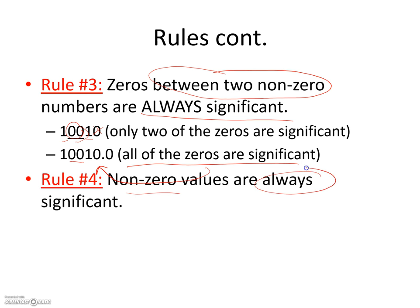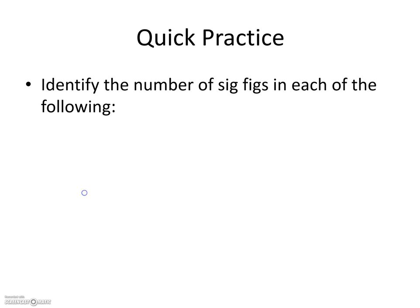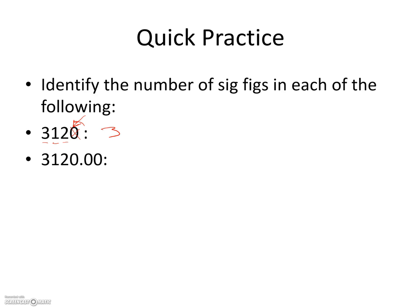Let's put this into practice with some examples. Identify the number of sig figs in each number. First: 3,120. The 3, 1, and 2 are nonzero, so they're significant. We just need to determine whether that trailing zero is significant — it comes at the end of the number and does not accompany a decimal, so it is not significant. That gives us three sig figs: 3, 1, and 2.